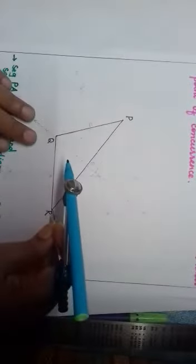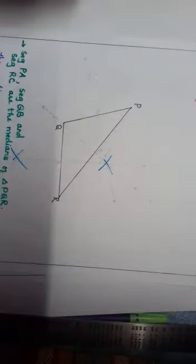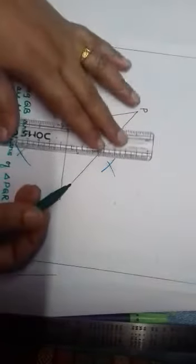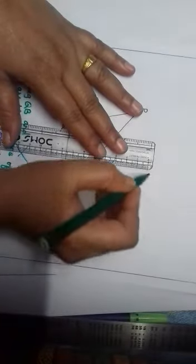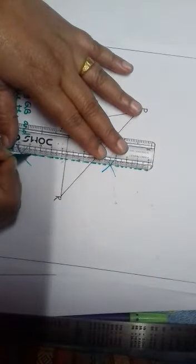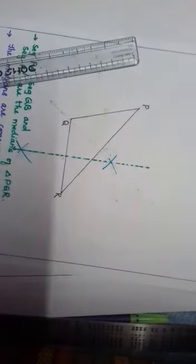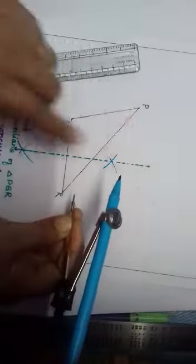How to draw the perpendicular bisector? First of all take side QR and take more than half distance on both sides of QR — from R and from Q as well. Use the point of intersection and join it by using a dotted line. In this way we have drawn one perpendicular bisector of side QR.